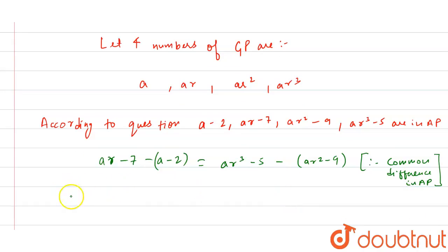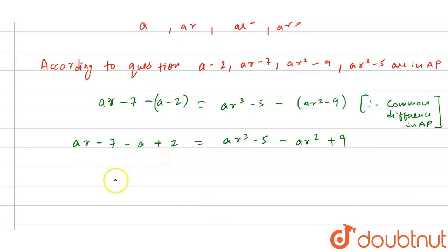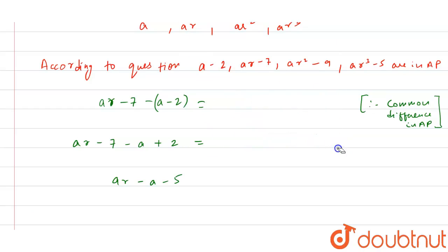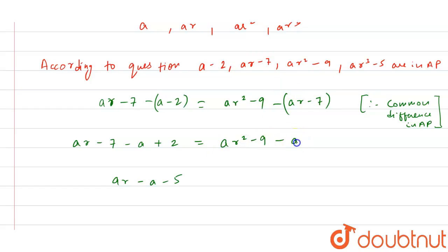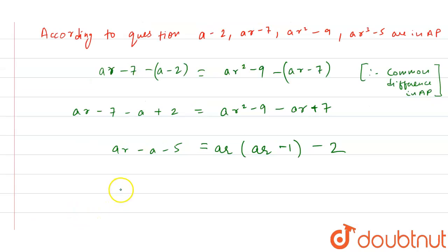Solving the left-hand side: AR minus 7 minus A plus 2, and the right-hand side: AR squared minus 9 minus AR plus 7. There was a small correction needed in the setup. The corrected common difference equation gives us AR squared minus 2AR minus A equals 3, which is our first equation.